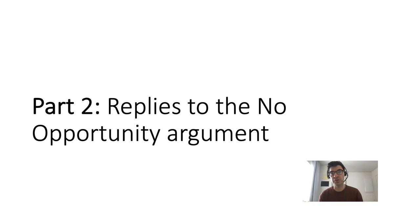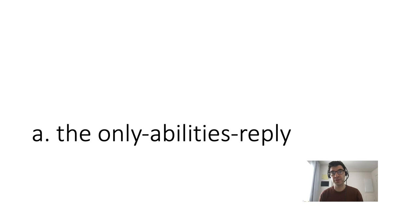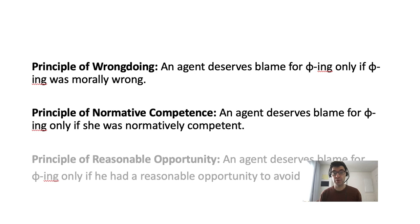Let's start with the first reply, which is the only one that Franklin discusses, and that's what we might call the only abilities reply. Franklin argues that to account for our practice of holding people morally accountable, we need three principles: the principle of wrongdoing, the principle of normative competence, and the principle of reasonable opportunity. But this reply claims that to account for our moral accountability practice, we only need these two principles, so we don't need the principle of reasonable opportunity.